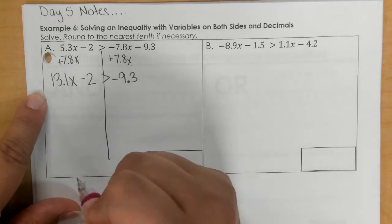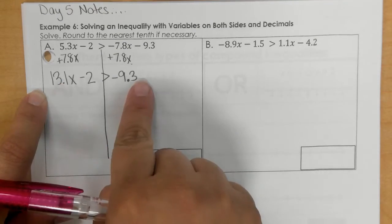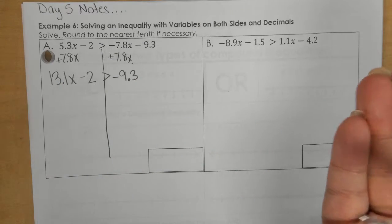And if I add that together, we are going to get 13.1x minus 2 greater than negative 9.3. Now this is just a two-step equation. If we didn't have the 0.1 and the 0.3, we would still solve it the same way.